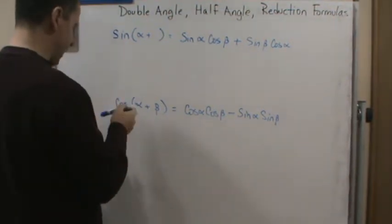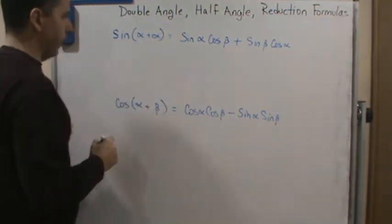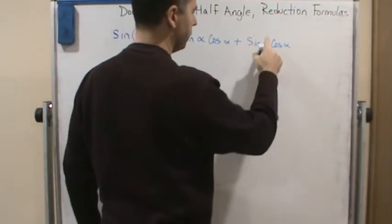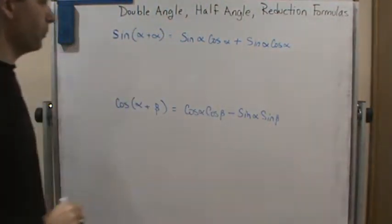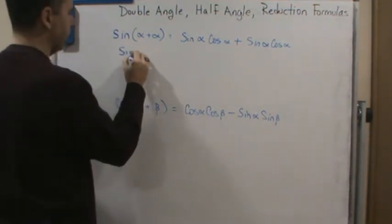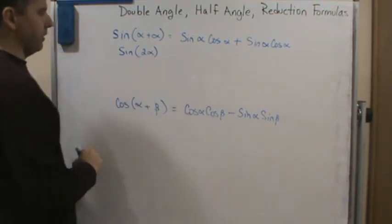So if I change this to alpha plus alpha, right, then I'm going to change this. Again, we're under the assumption that beta is equal to alpha. And so we get this, and so we get sine of 2 alpha, there's where the double angle comes in, 2 times alpha.